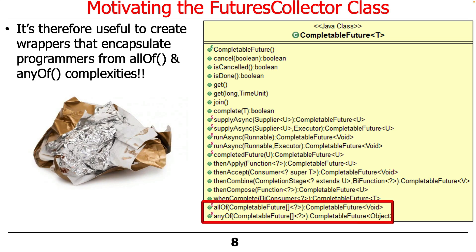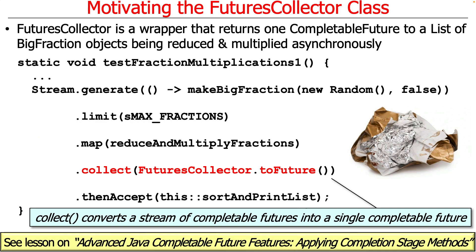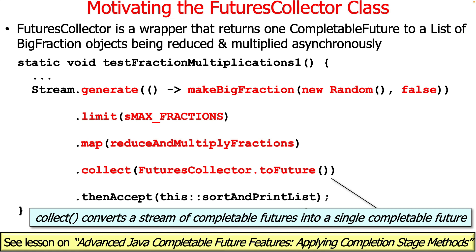The way to solve this problem and make things less complicated is to wrap it with a wrapper class that encapsulates all these complexities within a nice object-oriented abstraction. So we're going to create the FuturesCollector class with a factory method called toFuture. This will convert a stream of CompletableFutures into a single CompletableFuture that will be triggered when all the other CompletableFutures complete. The other great thing here is that we've got a way to integrate CompletableFutures with Java streams, so we don't have to write awkward control flow with loops and if statements. Instead, we can make a nice CompletableFuture stream and collect the results. It's a nice idiom used a lot, and it's used in your programming assignment as well.